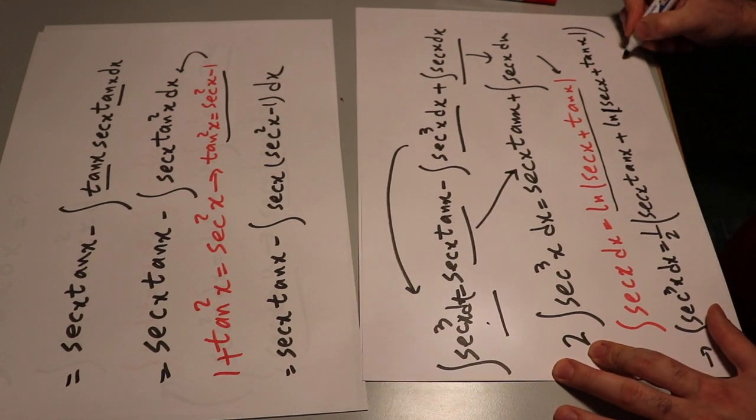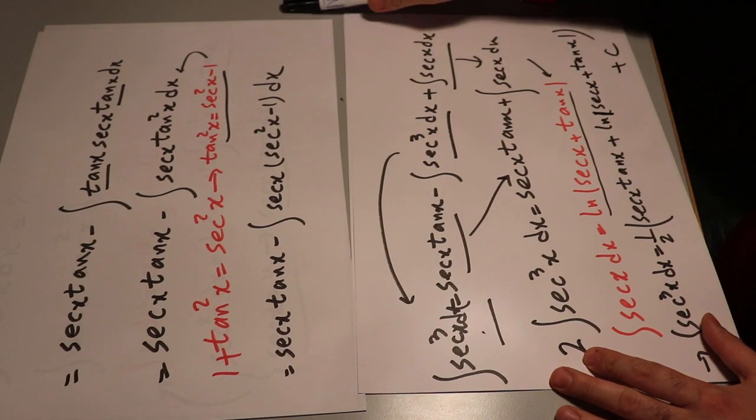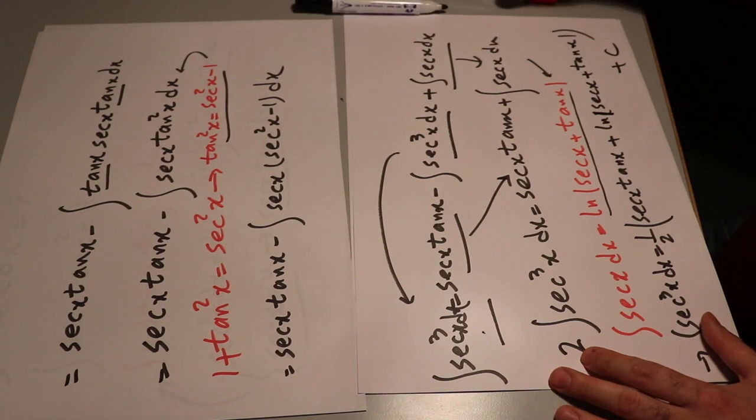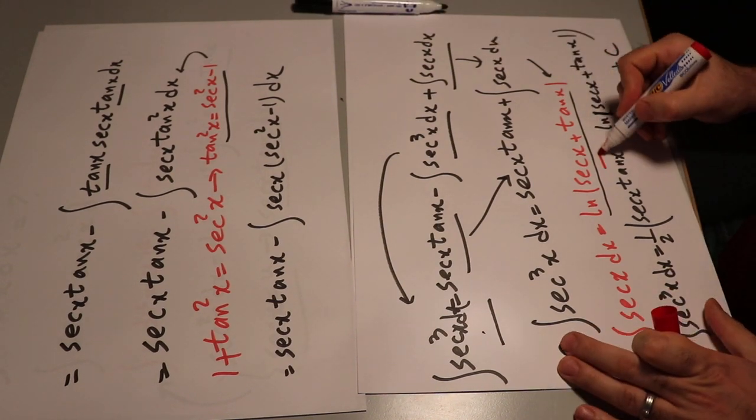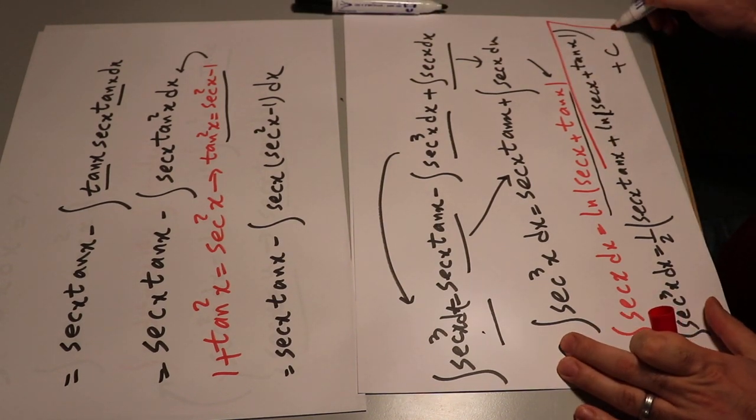That is ln |secant x plus tangent x|, plus C — that is the constant of integration. And that is the solution to our integral.